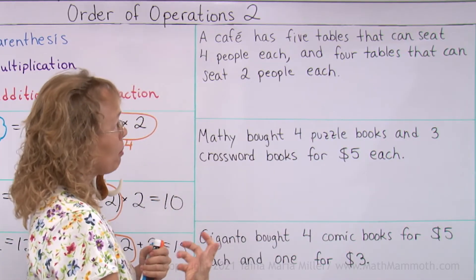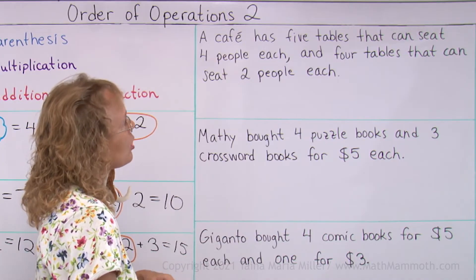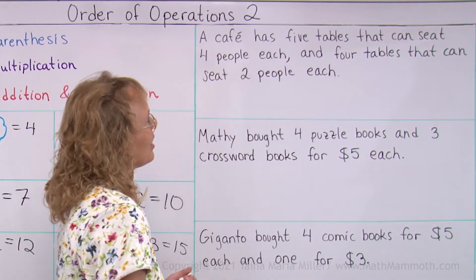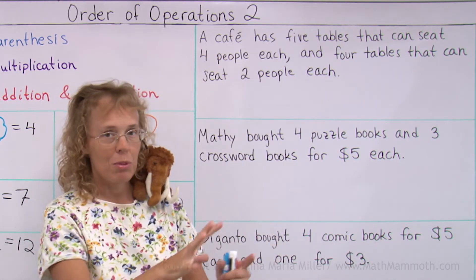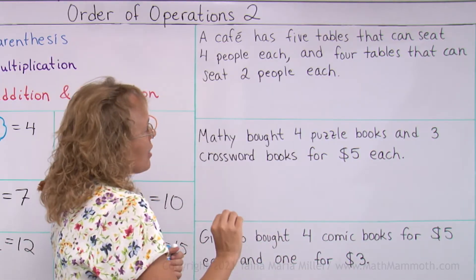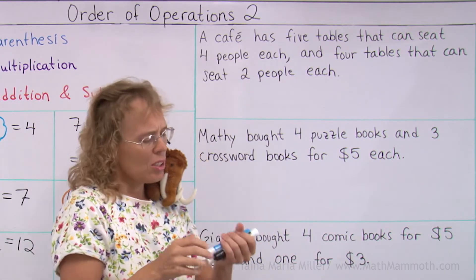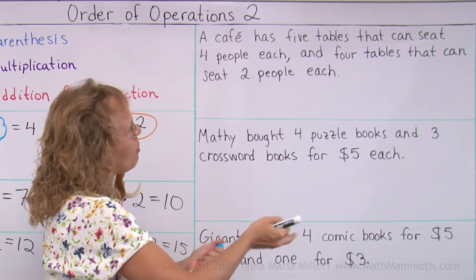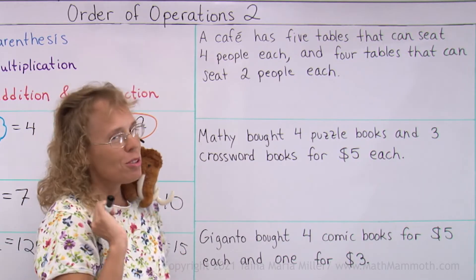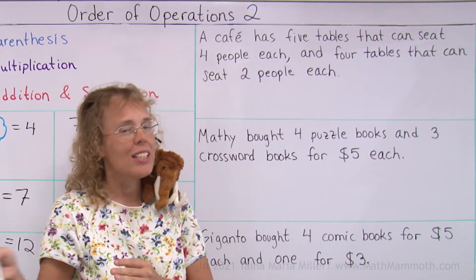A cafe has 5 tables that can seat 4 people each, and 4 tables that can seat 2 people each. So we could find out how many people could be seated in this little cafe. I want you to write a number sentence for the total number of people that could be seated at these tables.